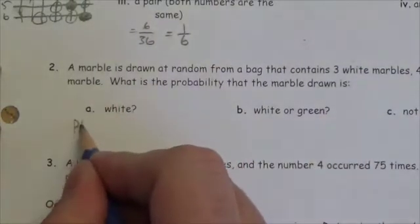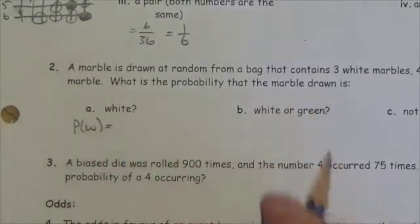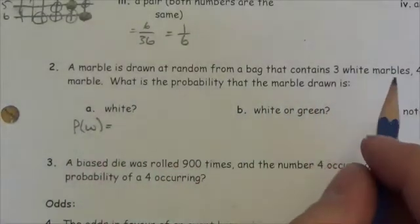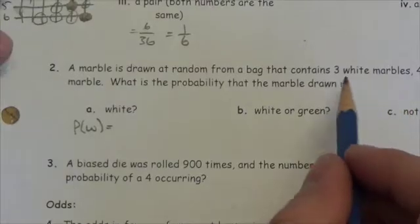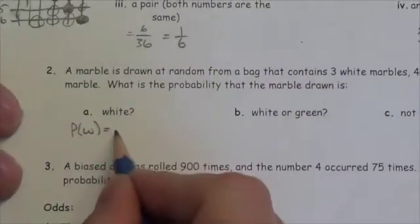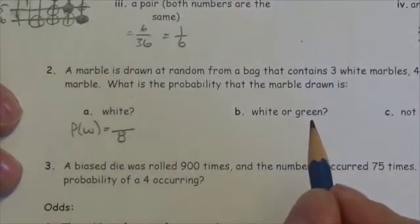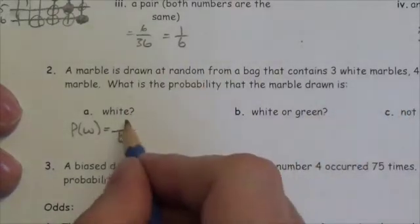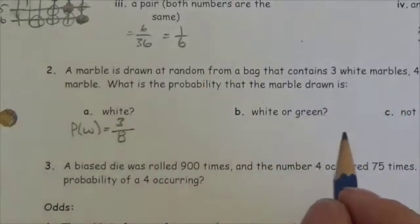So we're looking for the probability of a white here. What have we got here? First of all, we've got to figure out how many marbles are our total. I've got three white, four green, and one black. That's eight marbles total, and I've got three white. So the probability is three out of eight.